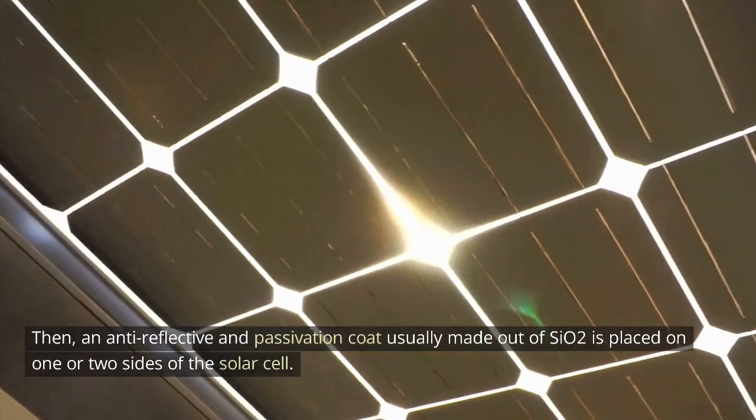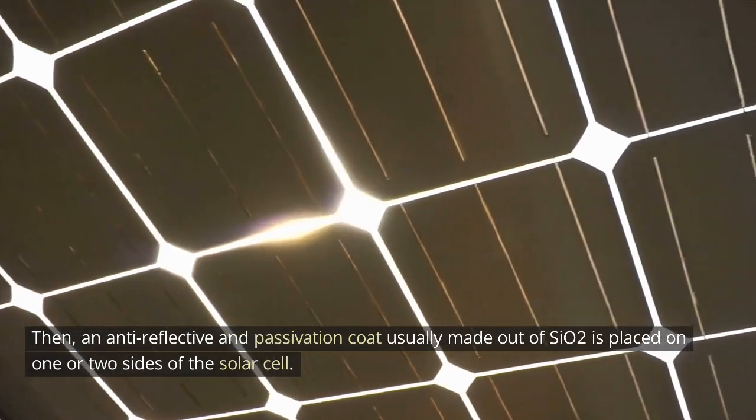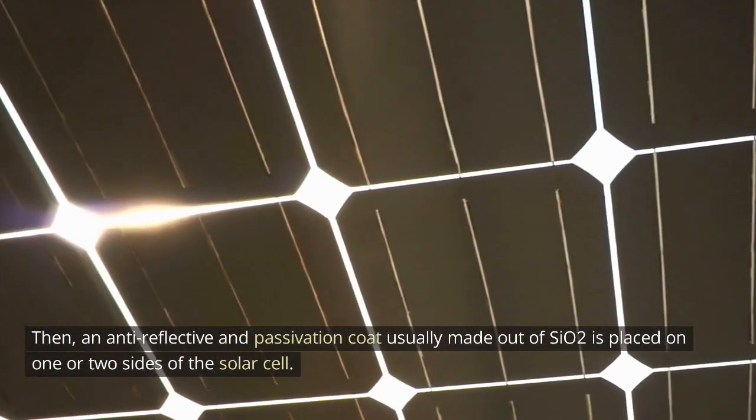Then, an anti-reflective and passivation coat usually made out of SiO2 is placed on one or two sides of the solar cell.